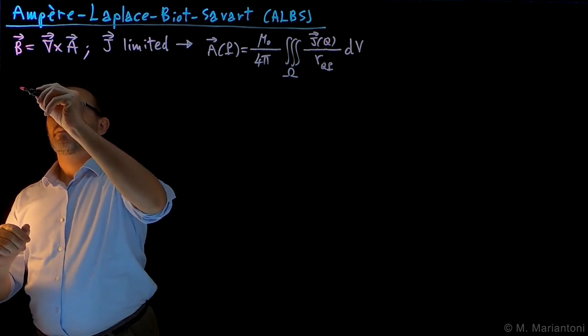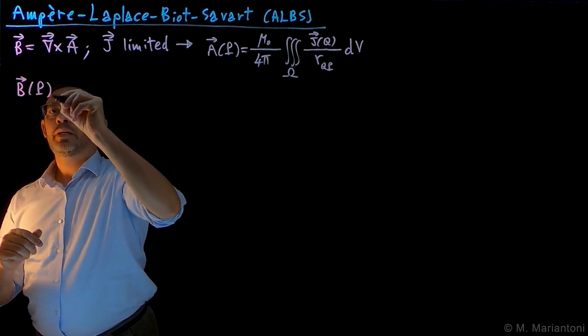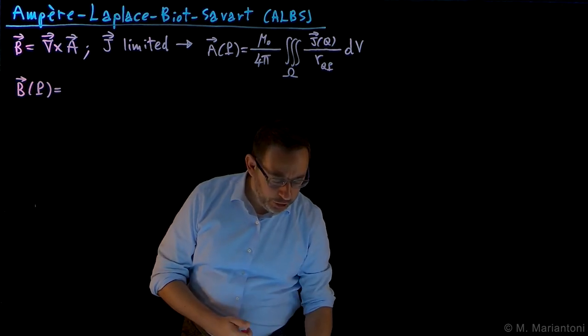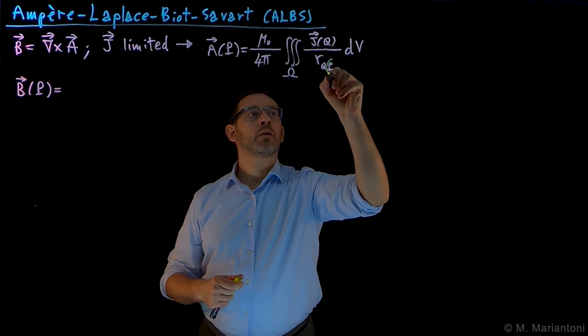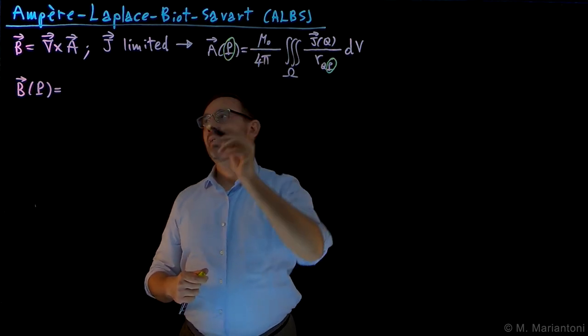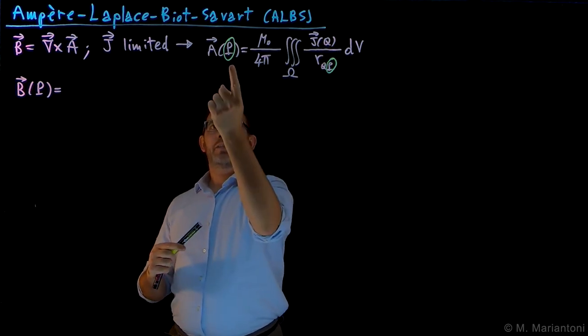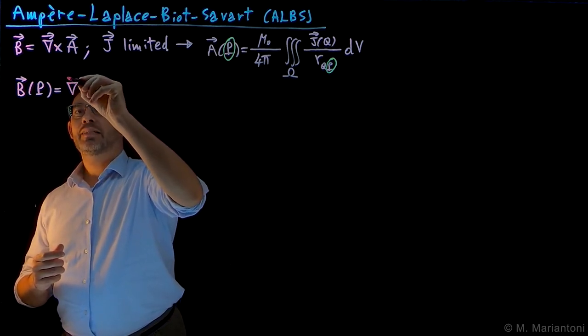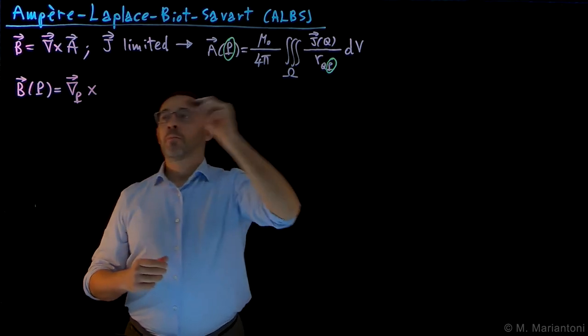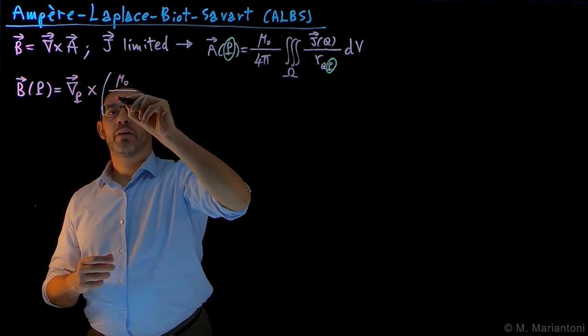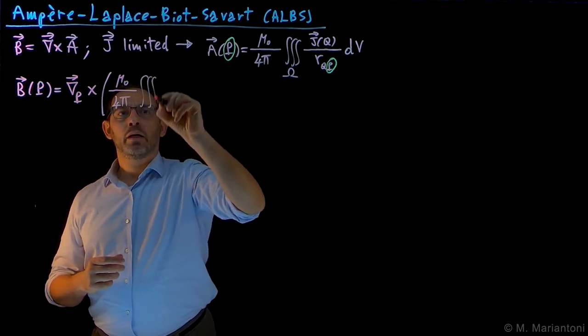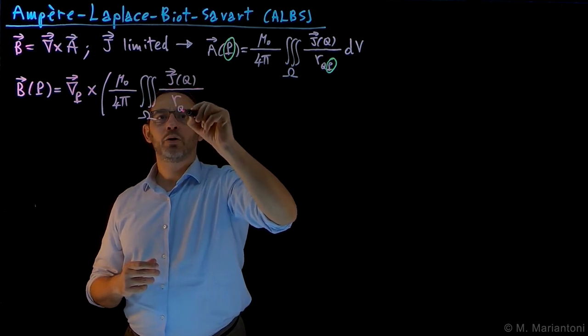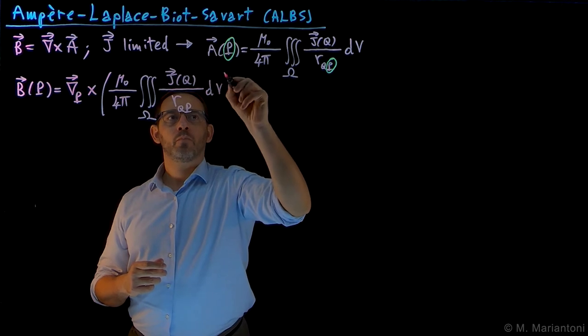Now we want to plug in this equation here inside the curl of A. Therefore we obtain that B at any observation point capital P is equal to, well, what we are doing here, we are doing the curl with respect to what? You need to be careful, we are doing the curl with respect to P. This is what we need to do because the integral is over Q, so A at the end of the day is only function of capital P, and that's what the curl has to be. Let's write down as such the curl, and let us specify that it is with respect to P of all this quantity here, μ₀ divided by 4π, a volume integral in the region capital Ω of J at the source point capital Q divided by R_QP dV.